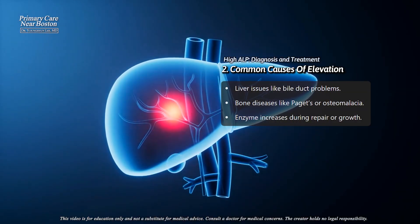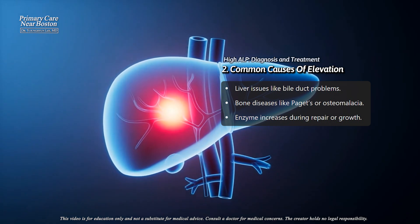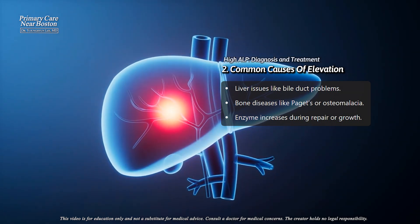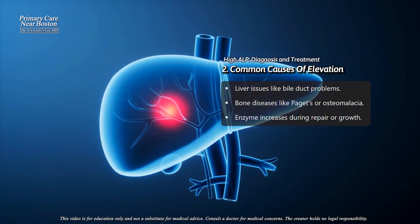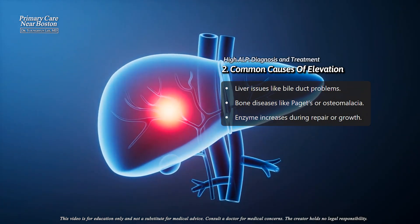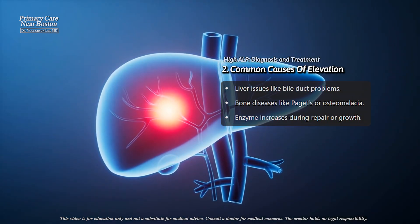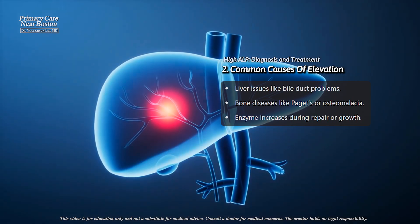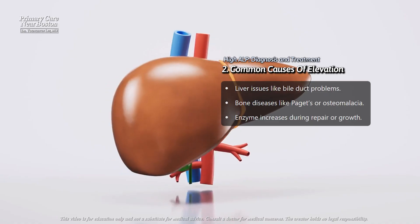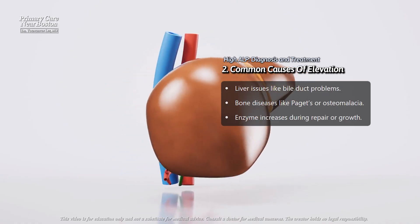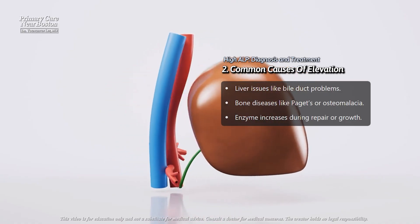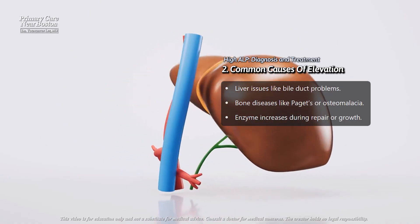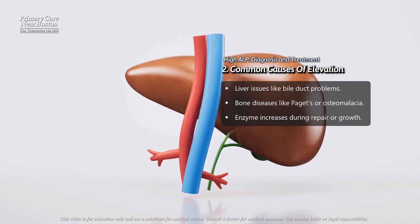For example, liver problems like bile duct obstruction, hepatitis, or cirrhosis can cause alkaline phosphatase to increase because the liver or bile duct cells may become stressed or injured.